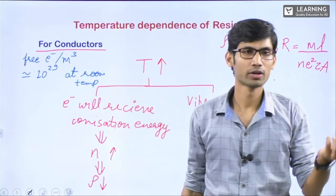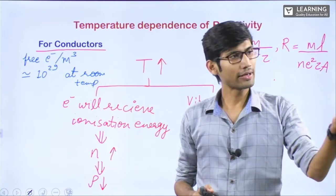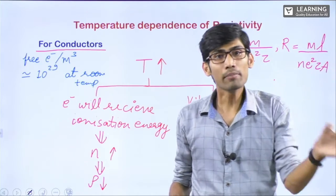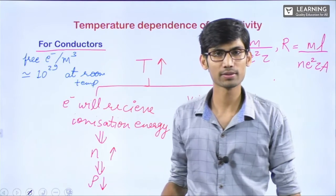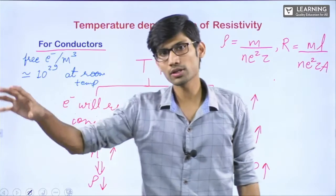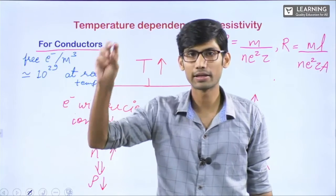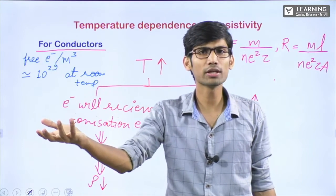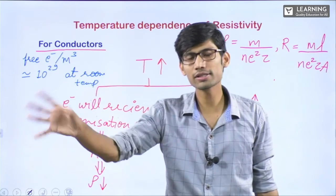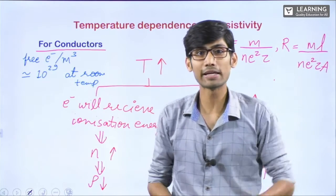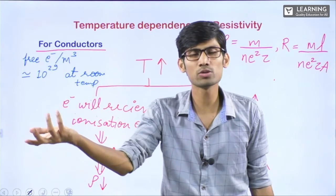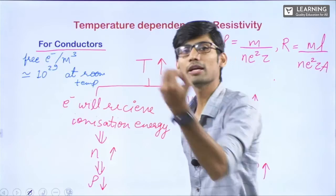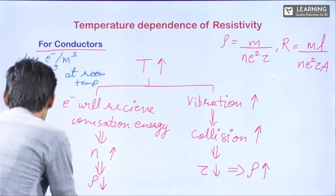Understand it this way: suppose in a room there is one person; if I add nine more people, now there are ten — the number increased ten times, which is a significant increase. But if there are 1000 people in the room and I add nine more, total becomes 1009 — approximately still 1000. The increase is not that significant. The same thing here: since already the number of electrons is very high, if some electrons increase, it does not make a very big impact. So this increase in N will remain insignificant for conductors.